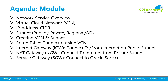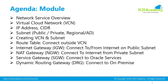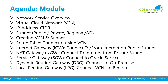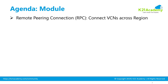Then we'll talk about service gateway, which is the gateway used to connect to other cloud services like object storage for backup. Then we'll cover dynamic routing gateway, which is required to connect your OCI network to on-premise using either fast connect or VPN connect. Then we'll look at local peering gateway, which connects two different VCNs within the same region inside your OCI account. If two VCNs are across different regions, you connect them via remote peering connection — RPC.